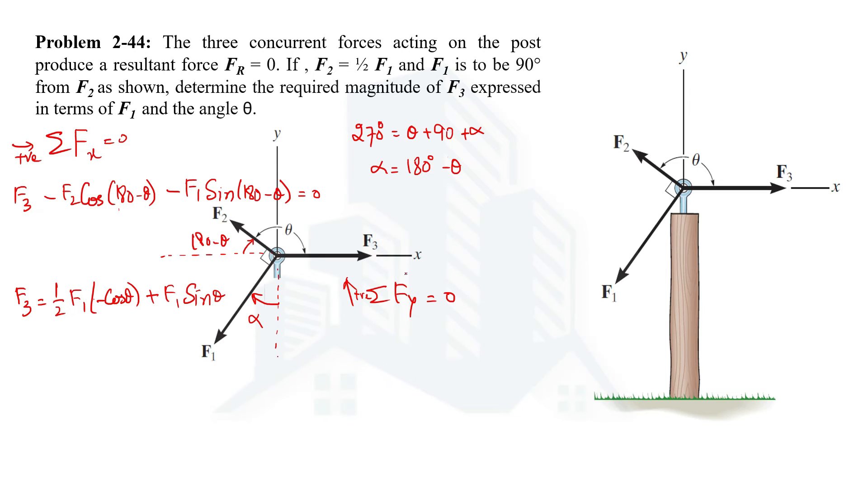Taking upward forces as positive, y component of F3 will be zero. The y component of F2 would be F2 sin(180 - theta), upward hence positive. But the F1 will have downward y component, hence negative F1. Instead of sine we will be having cos because this alpha is making an angle with the y-axis.